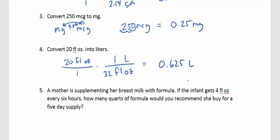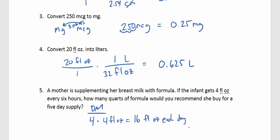Question 5: A mother is supplementing breast milk with formula. If the infant gets 4 fluid ounces every 6 hours, how many quarts of formula should she buy for a five-day supply? First, figure out the daily amount: 24 hours divided by 6 is 4 feedings per day, times 4 fluid ounces equals 16 fluid ounces per day. For a five-day supply: 16 times 5 equals 80 fluid ounces for five days.